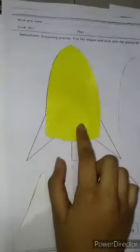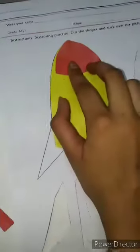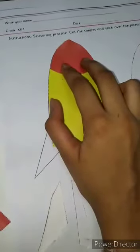So kids, we are done with sticking this part. Now I will stick these parts. First, on the top of the rocket, we will use this red color triangle and place it over here.